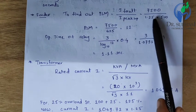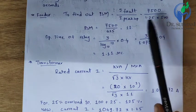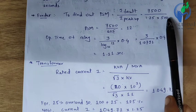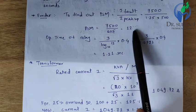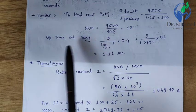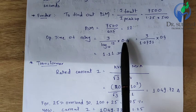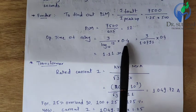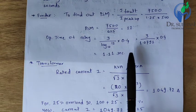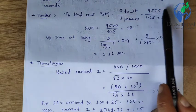Pickup current = 1.25 × 500 = 625 A. PSM = 7500 / 625 = 12. So the plug setting multiplier of the feeder relay is 12. Using the operating time equation T = 3 / (log10(PSM)) × TMS, with PSM = 12 and TMS = 0.5, the feeder relay operating time is 1.11 seconds.